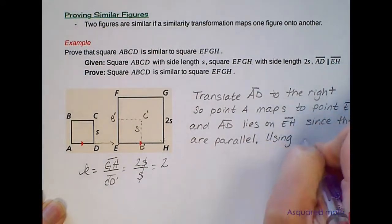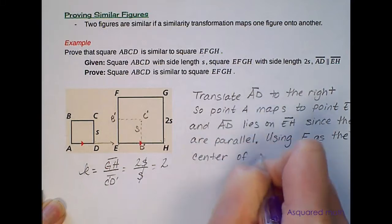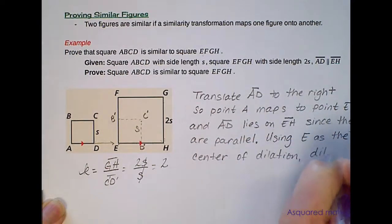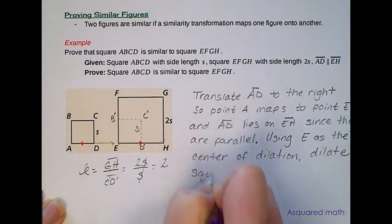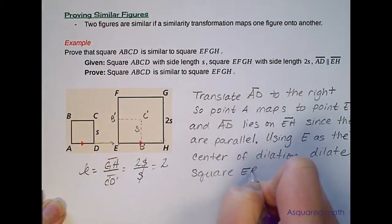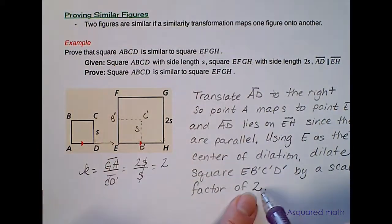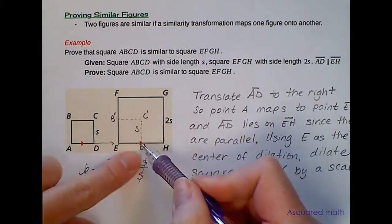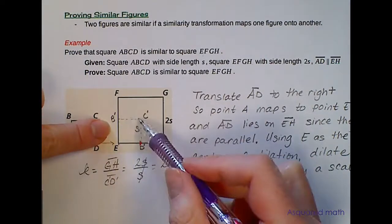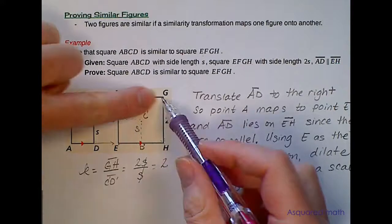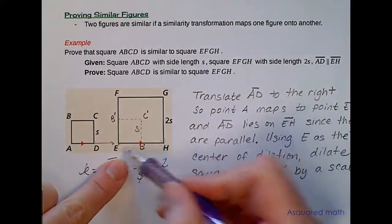We will then write, using E as the center dilation, dilate square E, B prime, C prime, D prime by a scale factor of 2. Once you apply that scale factor of 2, 2 is greater than 1 so it means that we're enlarging the image, then E, B prime, C prime, D prime will extend out and map itself onto EFGH.